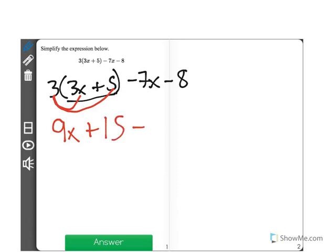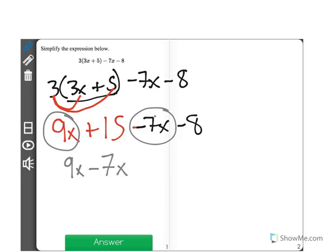And we still have minus 7x minus 8. Next what we need to do is group like terms. So 9x minus 7x are like terms. And when combined, when we group them,